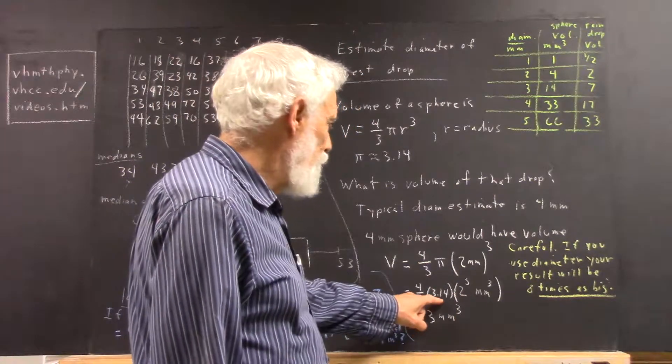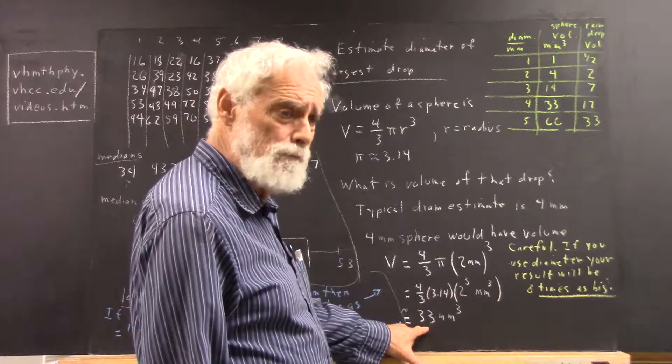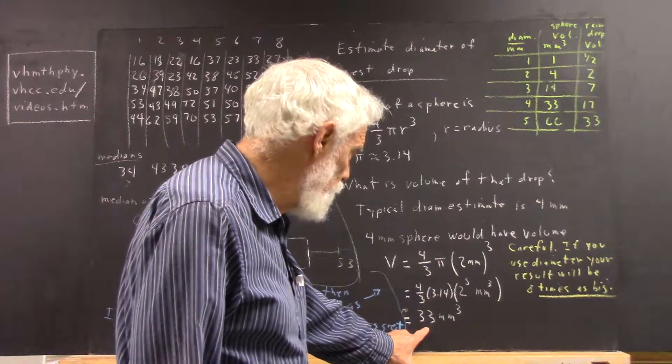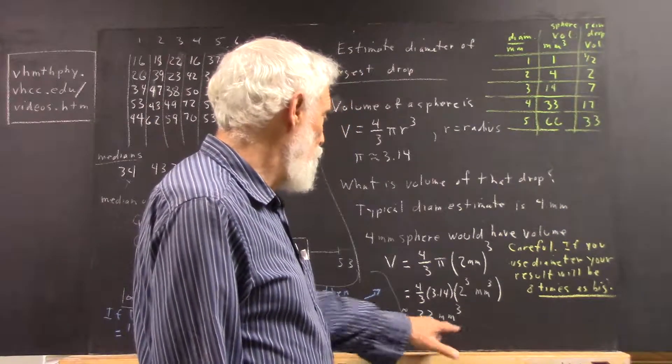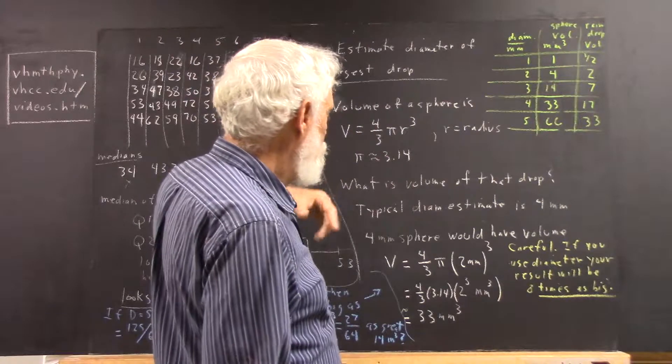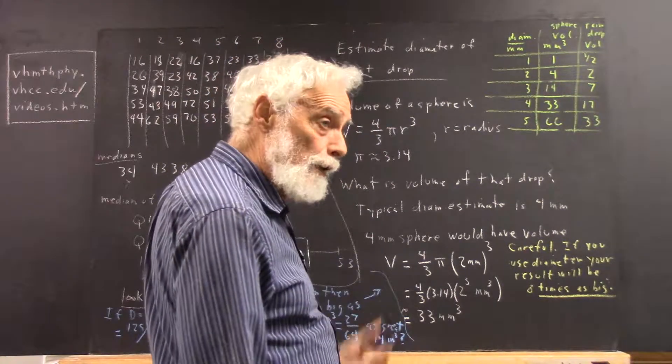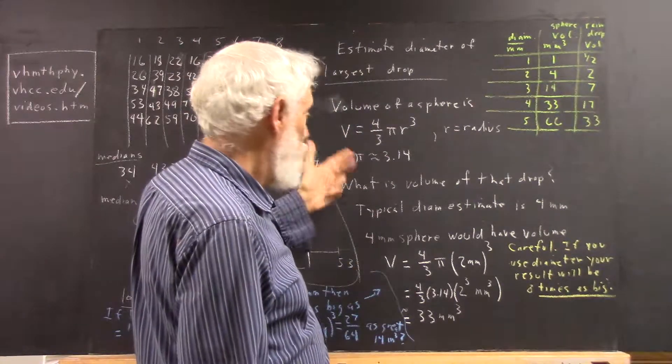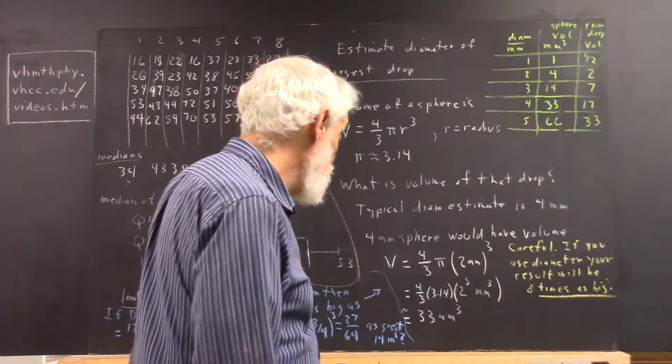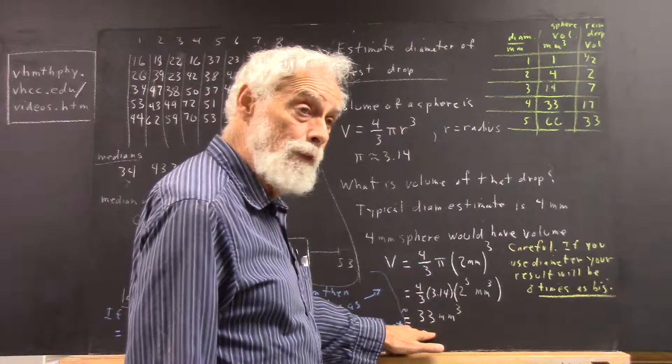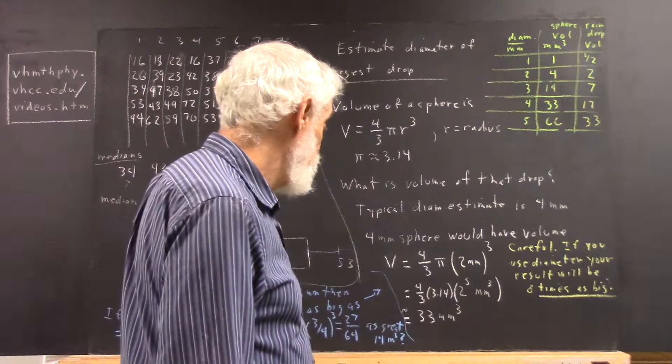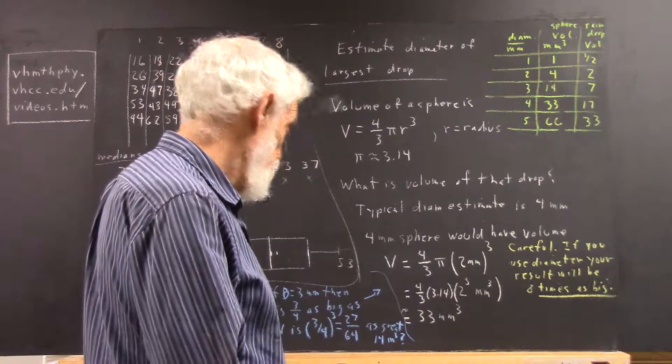But then, of course, we've got that 3.14, and that allowed me to raise the estimate to 33 millimeters cubed. Now, that's more precise than anything you would really expect to be the actual volume because it's really hard to estimate those diameters. But based on a four-millimeter estimate, this is what we would get for the volume of a sphere.